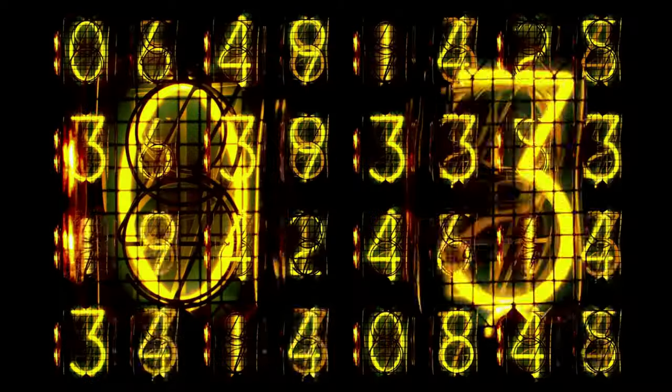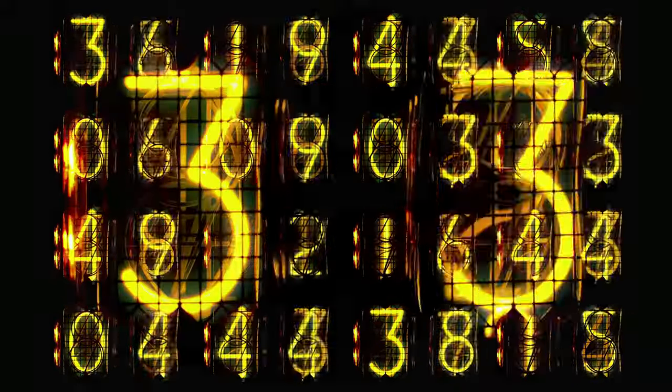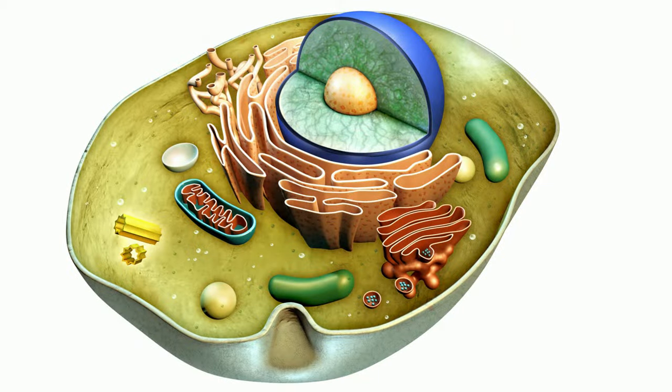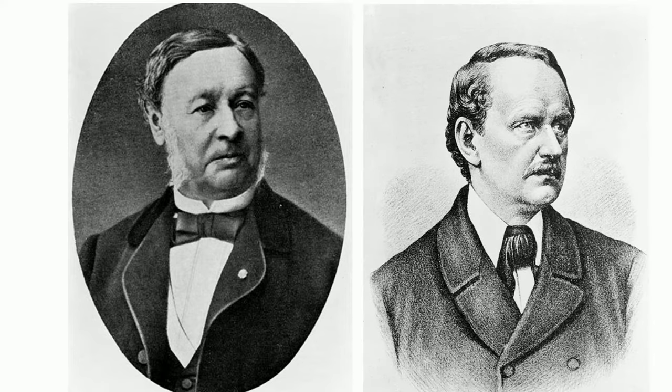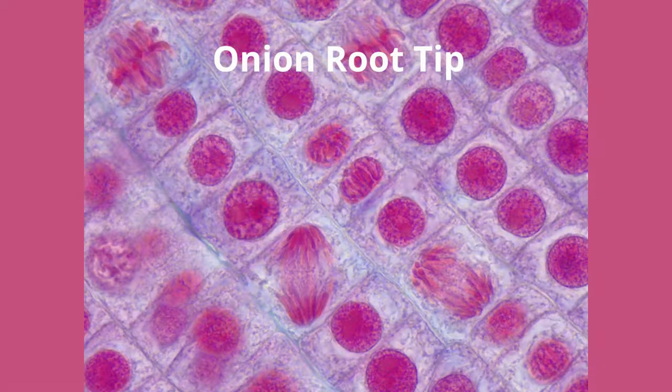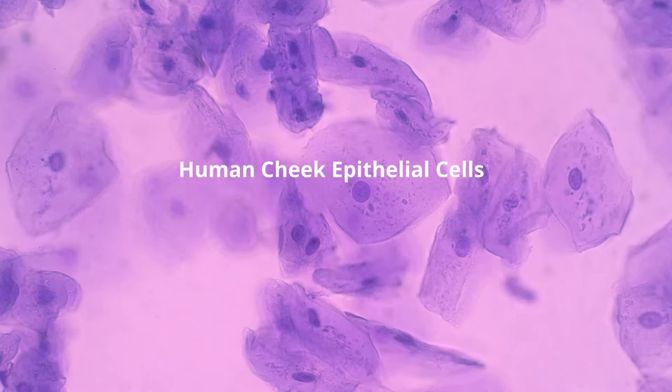It took roughly 175 years before scientists learned enough about cells to come up with the cell theory. Credit for developing the cell theory is usually given to two scientists, Theodor Schwann and Matthias Schleiden. In 1839, Schleiden realized that plants are composed of cells, and during the same time, Schwann realized that animals are also composed of cells. This was ground-breaking stuff.